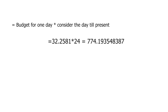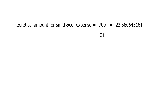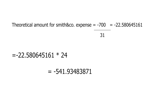For Smith & Co expenses, the planned amount is minus 700. So minus 700 divided by 31 gives minus 22.5806 — that is the amount that can be spent per day. To calculate the theoretical amount up to today (the 24th), multiply minus 22.5806 by 24, giving a result of minus 541.94.